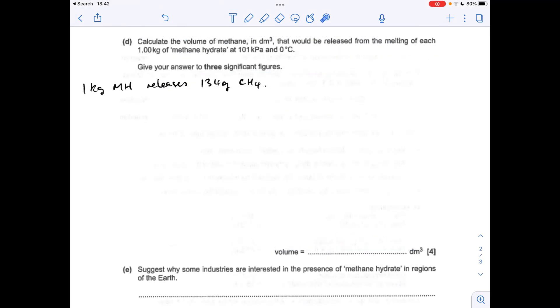Part D, now we've got to calculate the volume of methane released by a kilogram of methane hydrate. Well again we're using that percentage to get the mass of methane that's going to come off. So a kilo of methane hydrate will actually release 13.4 percent of that as methane, 134 grams. So we're going to turn that into moles and then use the ideal gas equation to get the volume. But remember it's got to be in decimeters cubed so there's a little conversion to do at the end.